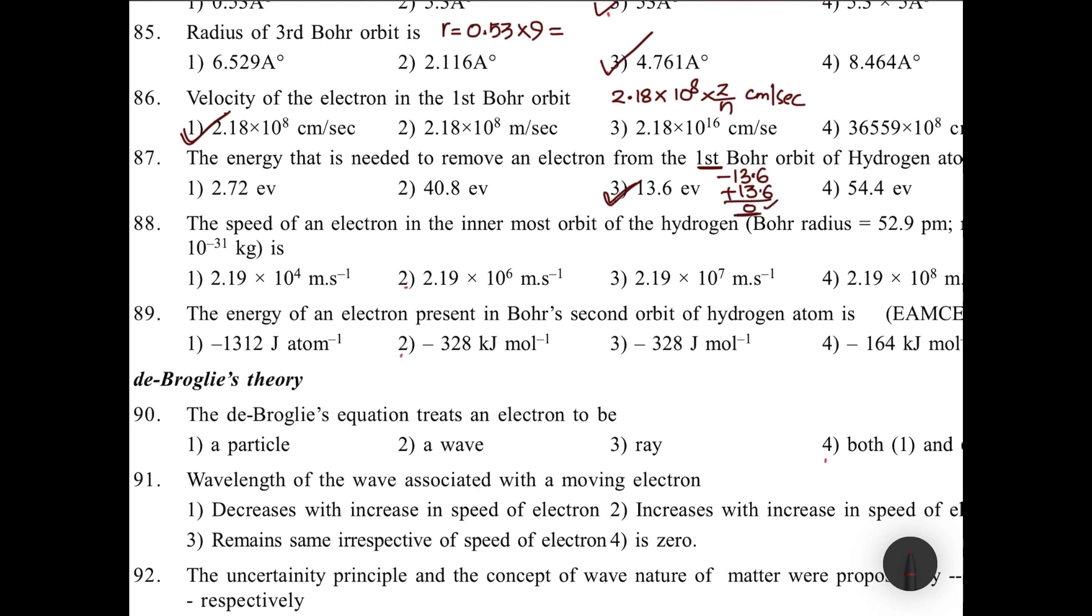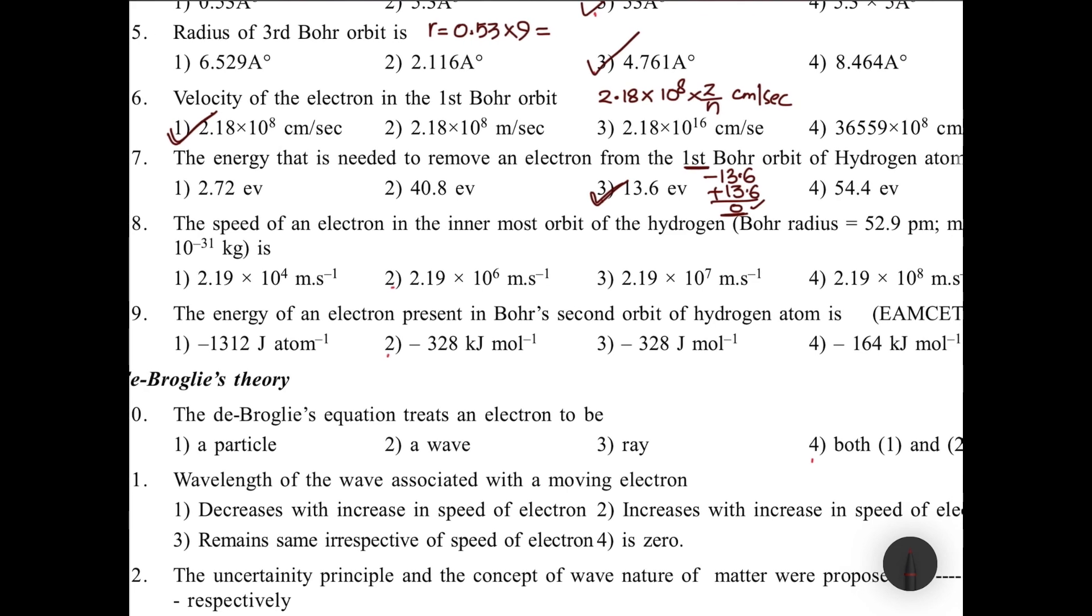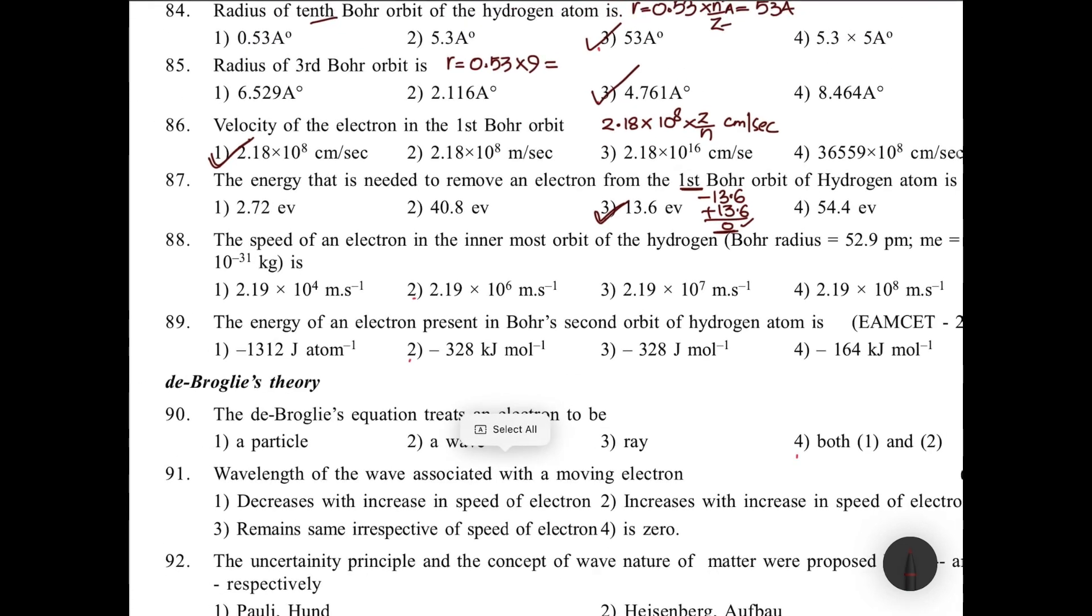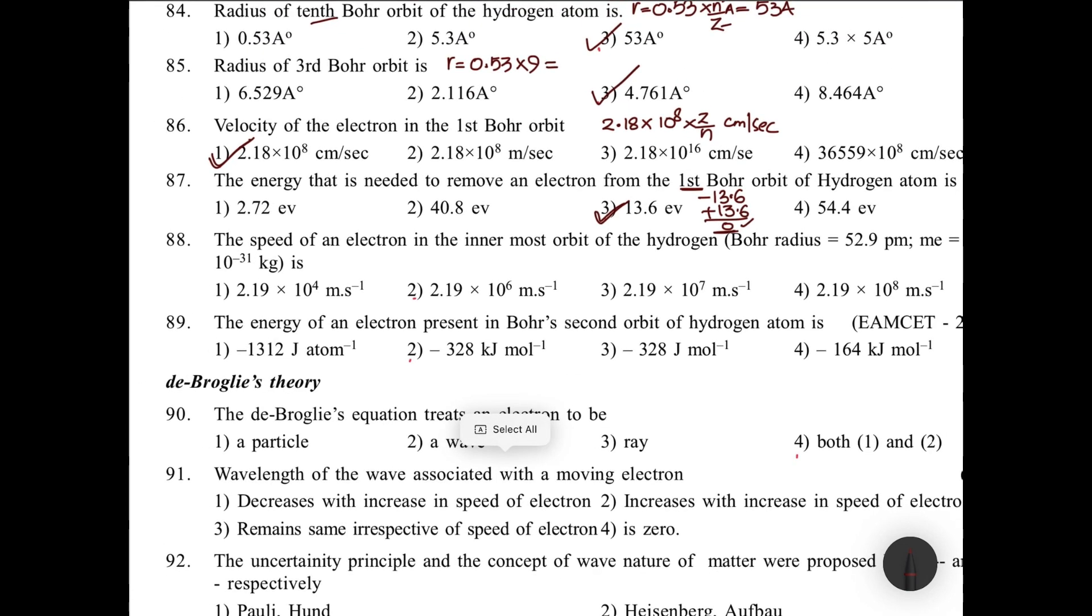The speed of an electron in the innermost orbit of hydrogen atom is 2.18 × 10⁸ cm/s. It's simply asking for n=1, z=1. The formula is 2.18 × 10⁸ cm/s or 10⁶ m/s. Direct formula.